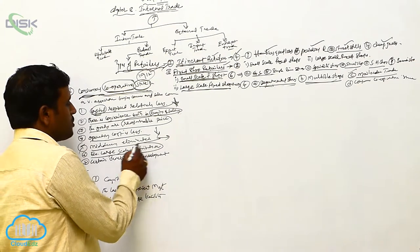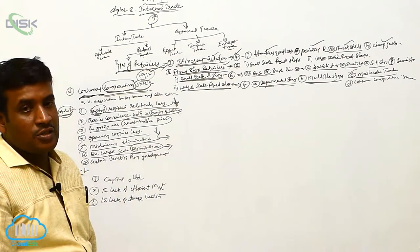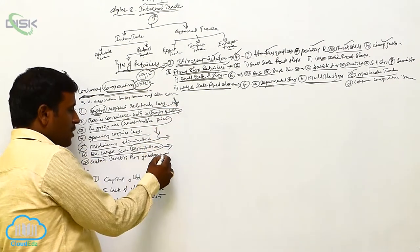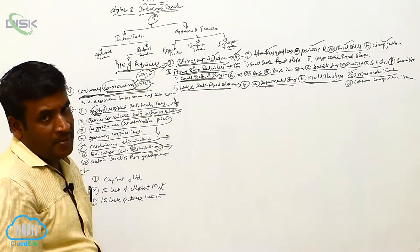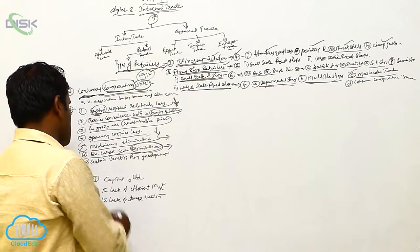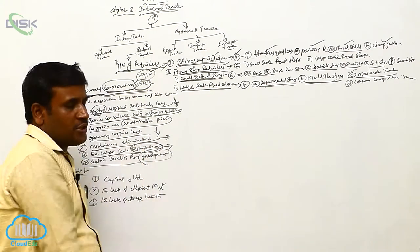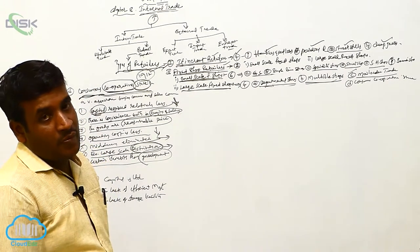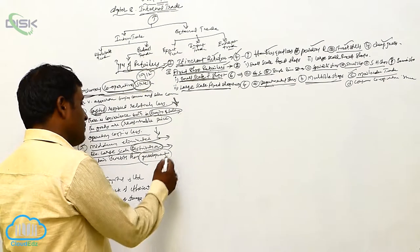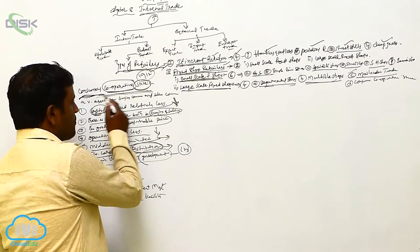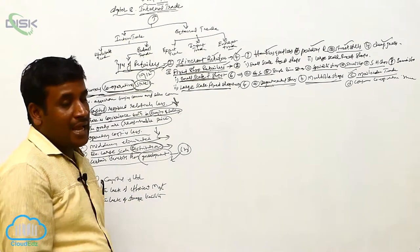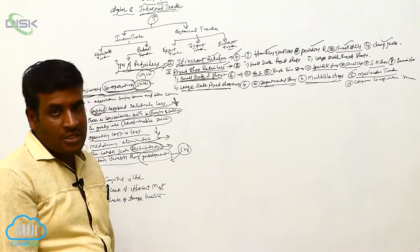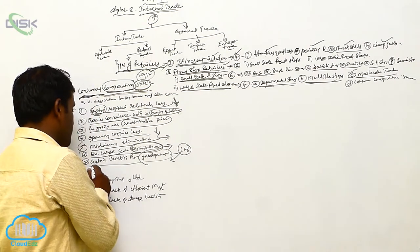Large-scale distribution is also possible, and a huge amount of capital is not required for it. Distribution is handled by members as well as outsiders. Additionally, there are certain benefits from the government, as it is cooperative in nature and focused on service rather than profit. Sometimes the government provides incentives, tax benefits, and subsidies to these stores.